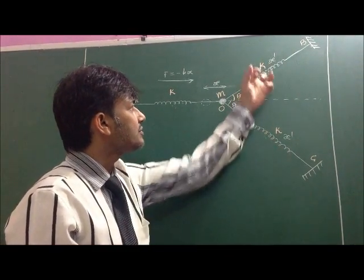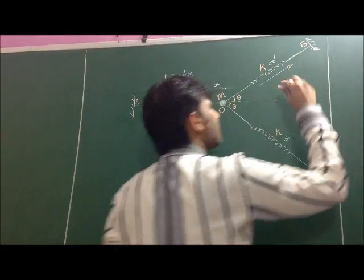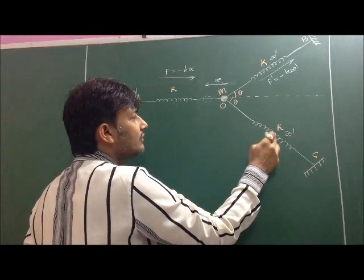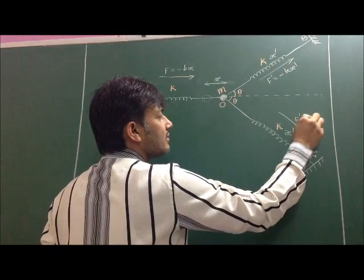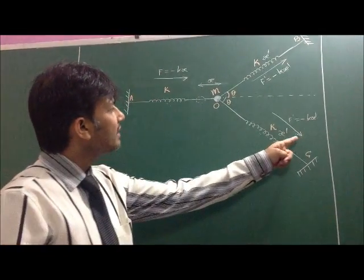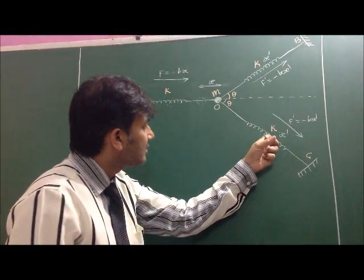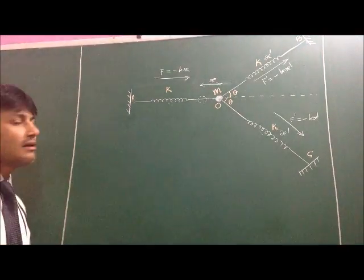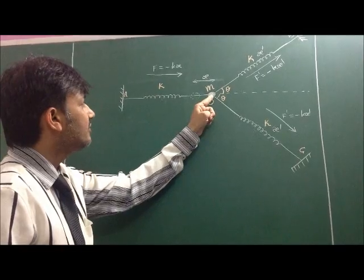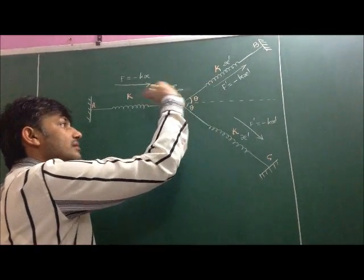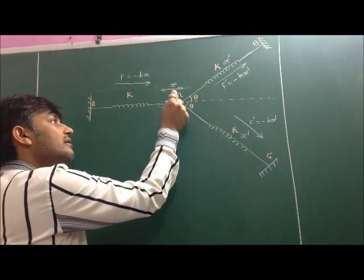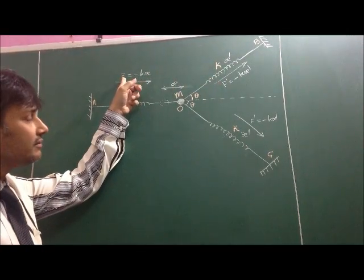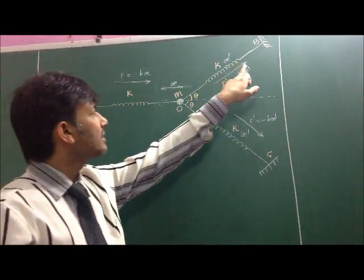Some restoring force will be produced in these two springs. The restoring force f-dash equals minus kx-dash, acting in the direction opposing elongation. As the length of these springs is increased, the restoring force acts back. Our target is to find the net force on mass M in the direction of oscillation, so we need to obtain the relation between f-dash and f, which requires finding the relation between x-dash and x.